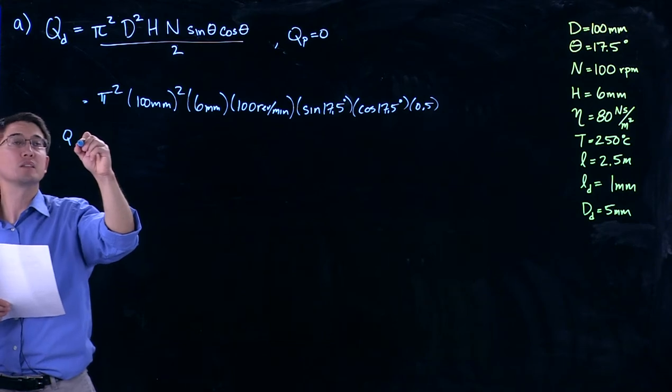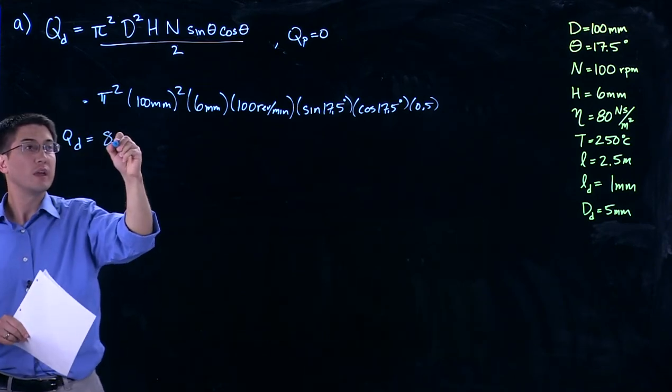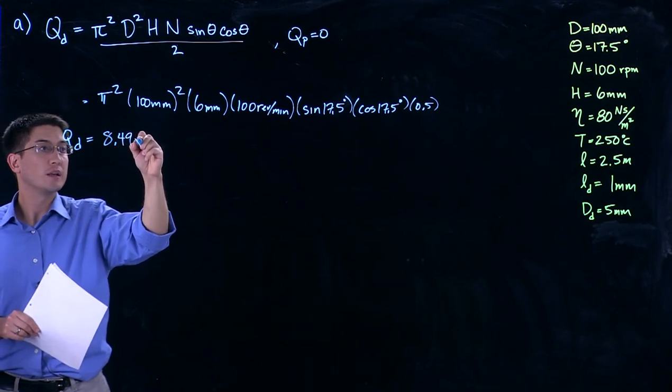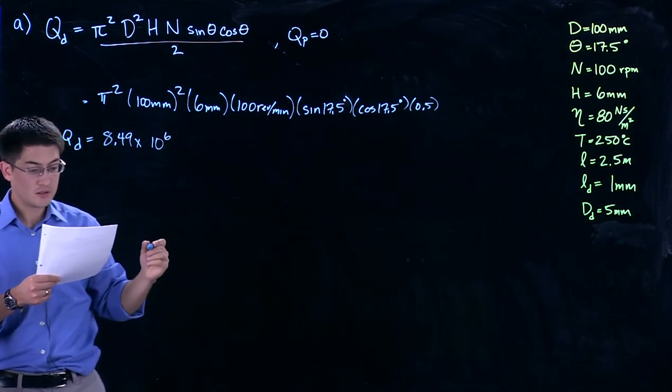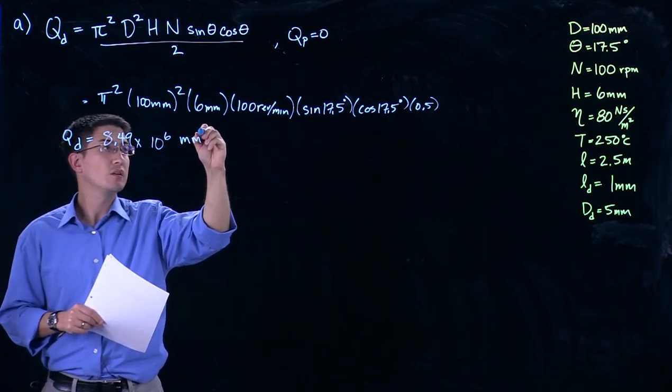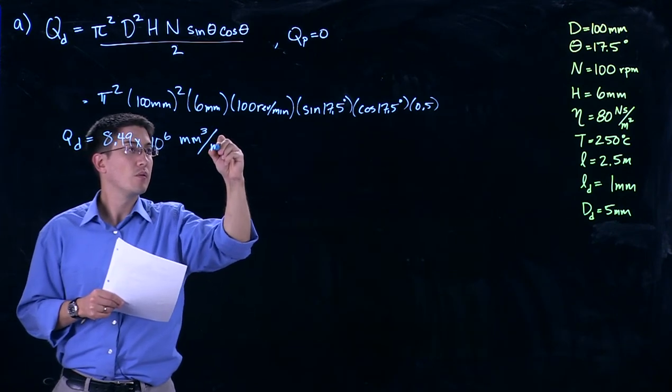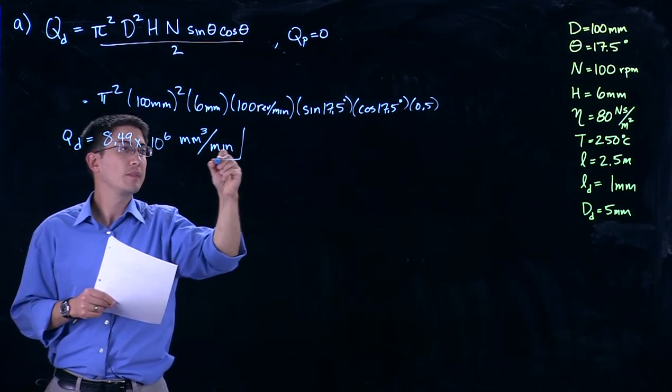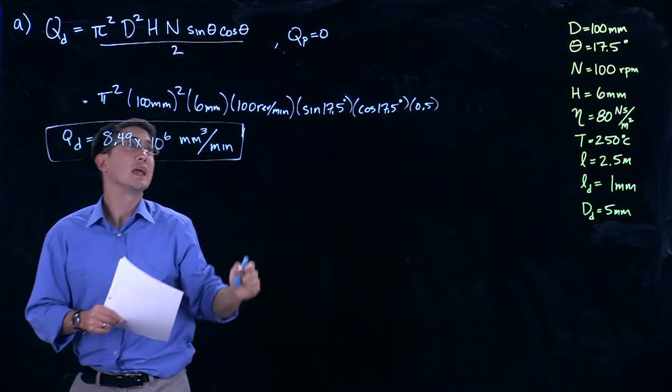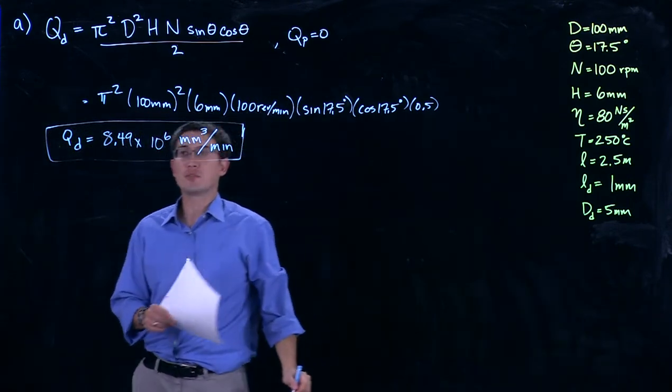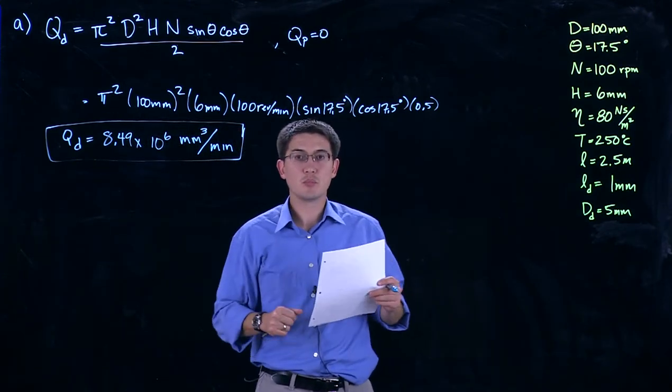This gives us a max flow, drag flow of 8.49 times 10 to the sixth cubic millimeters. Any pressure flow would be subtracted from that for our total flow rate. So this would be the maximum achievable.